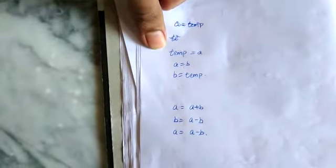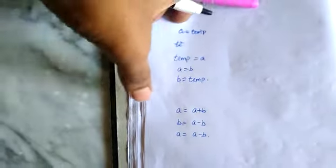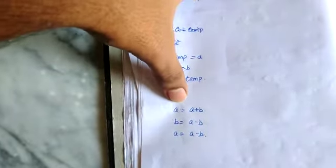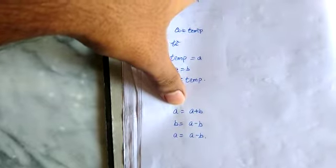This is the direct approach to solving swapping of two numbers. But one of the trickiest ways to solve swapping is: A equals A plus B, B equals A minus B, and A equals A minus B.